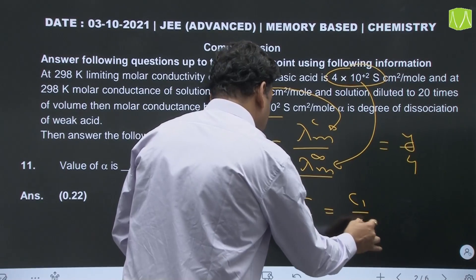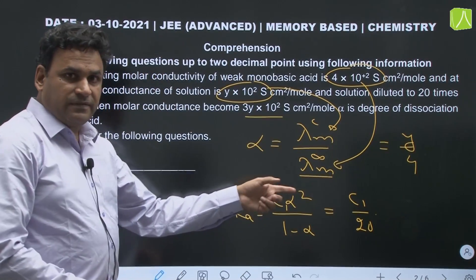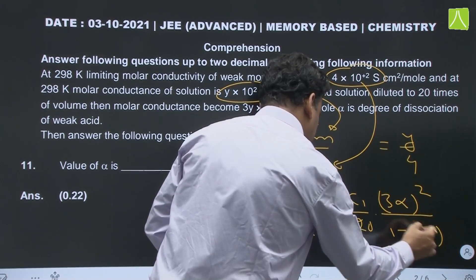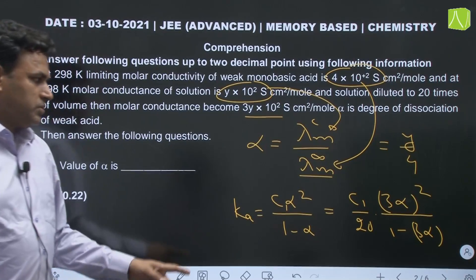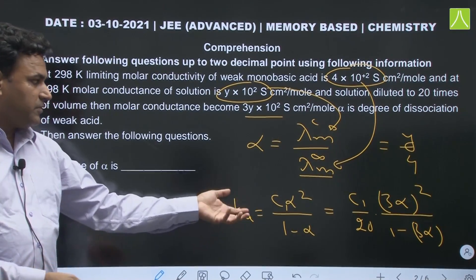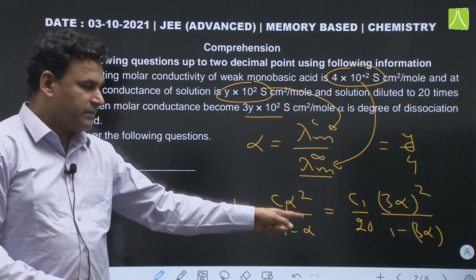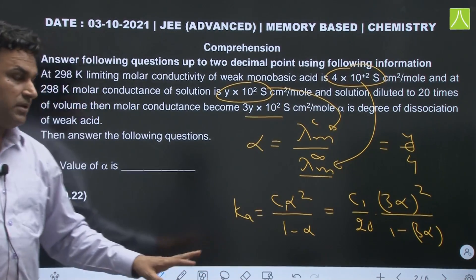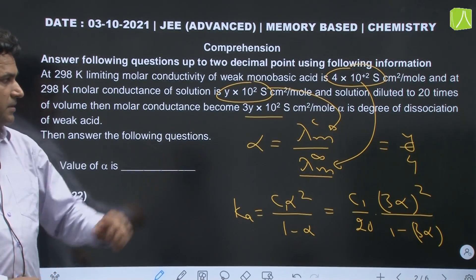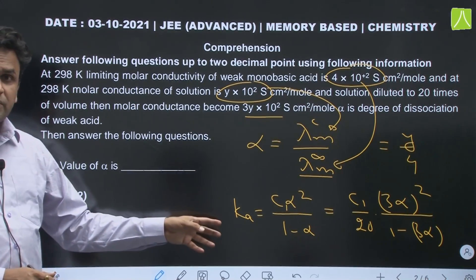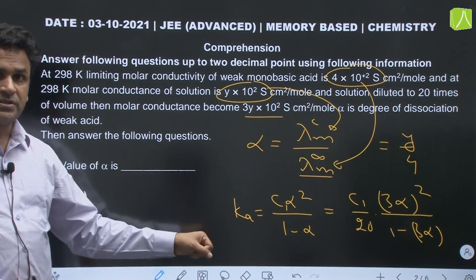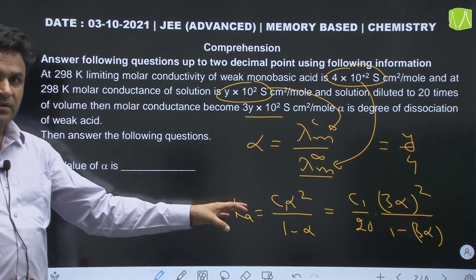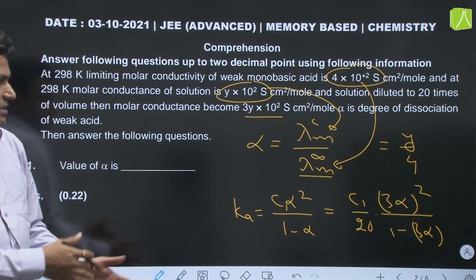After diluting 20 times, the concentration becomes C1/20, and the value of alpha becomes 3α. So Ka = (C1/20)(3α)²/(1 − 3α). This equation allows us to calculate the value of alpha, and from alpha we can calculate the value of Y. This question involves calculation and requires recognizing that the Ka of the weak monobasic acid remains the same.